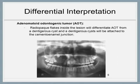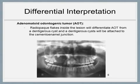Adenomatoid odontogenic tumor is a rare radiolucency involved with an impacted tooth or teeth. Radiopaque flakes inside the lesion will differentiate AOT from a dentigerous cyst. Likewise, attachment of the cyst to the cementoenamel junction will propose a dentigerous cyst.